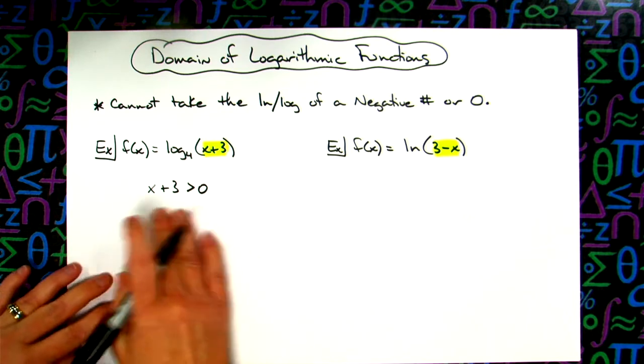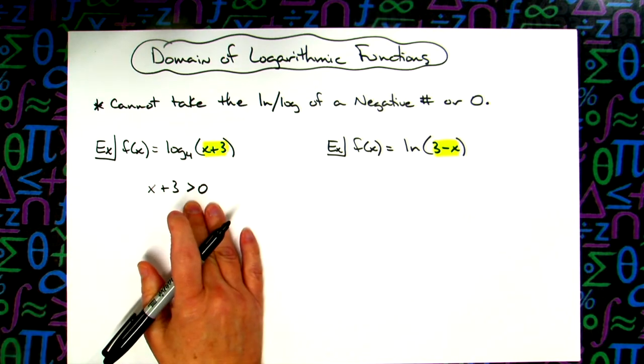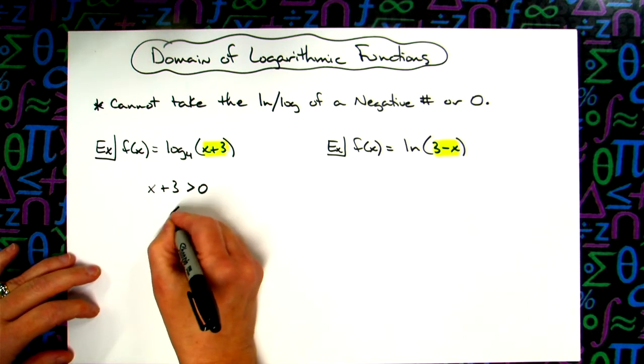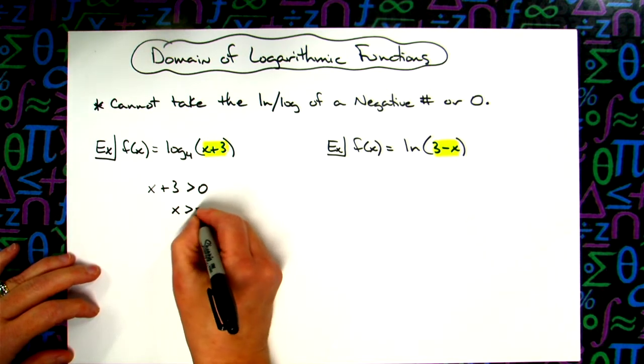So if I think of this from an algebraic standpoint, I can just simply solve this equation, subtract 3 from both sides of the equation, x is greater than negative 3.